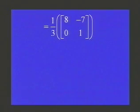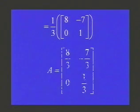In the end, you'll come up with 1 third times 8, negative 7, 0, 1. Now, multiply by 1 third, and we have what A is. 8 thirds, negative 7 thirds in the first row. Second row 0, 1 third.